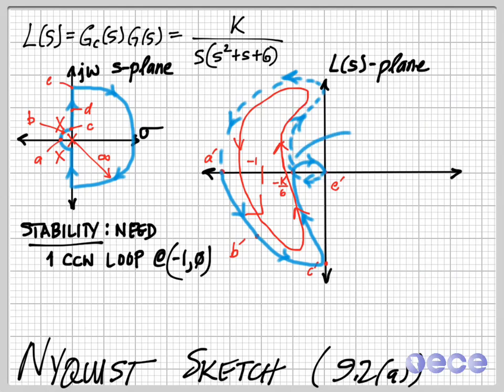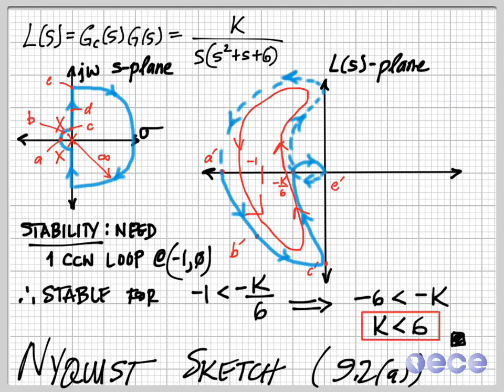But as we increase the value of K, we'll see that this point here, that minus K over 6 will get larger and larger until it's on the other side of minus 1. And so our stability requires that minus 1 has to be less than minus K over 6. So we can then just solve this inequality. Minus 6 has to be less than minus K, or K has to be less than 6. So for any value of K less than 6, our system will be stable.